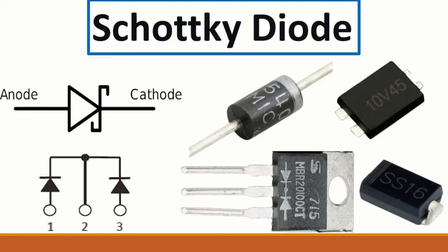Then we have the Schottky diode - its symbol is like a normal diode but with a bent line at the cathode. We have the anode and the cathode. You can also find a Schottky diode with two terminals, three terminals, or even four terminals. For example, two diodes connected at their cathodes give three terminals.